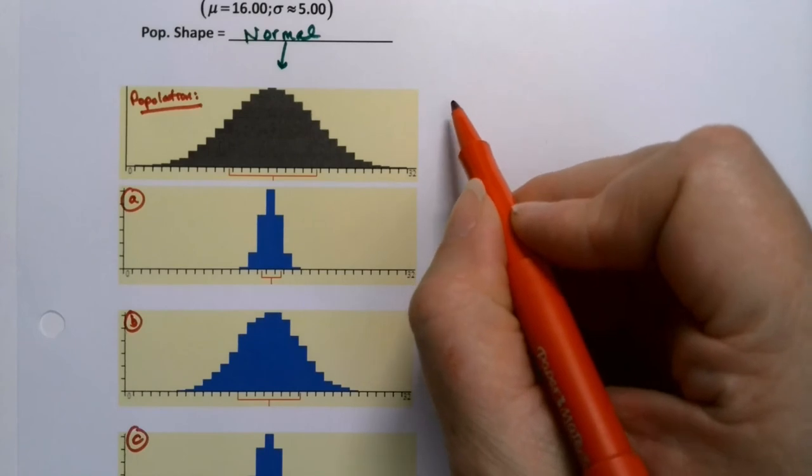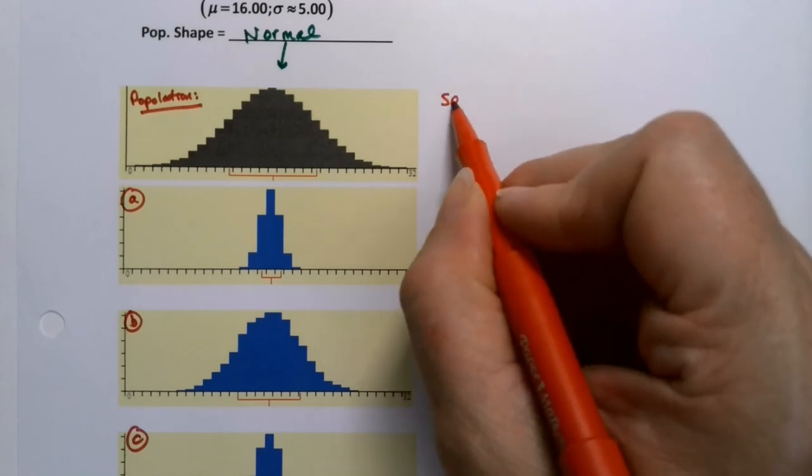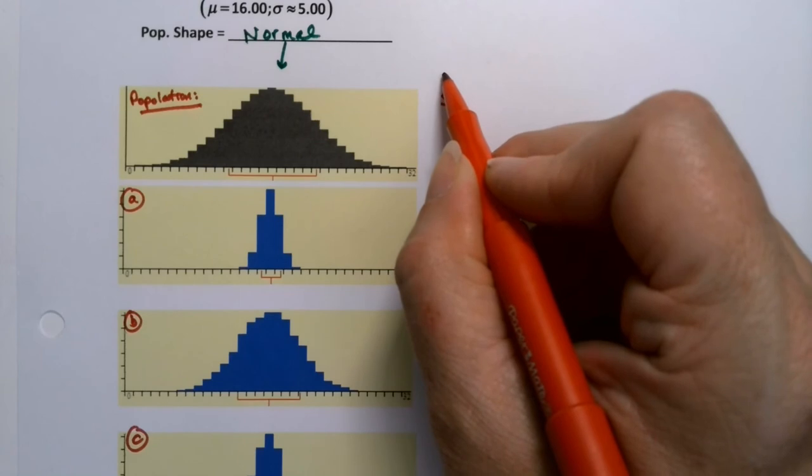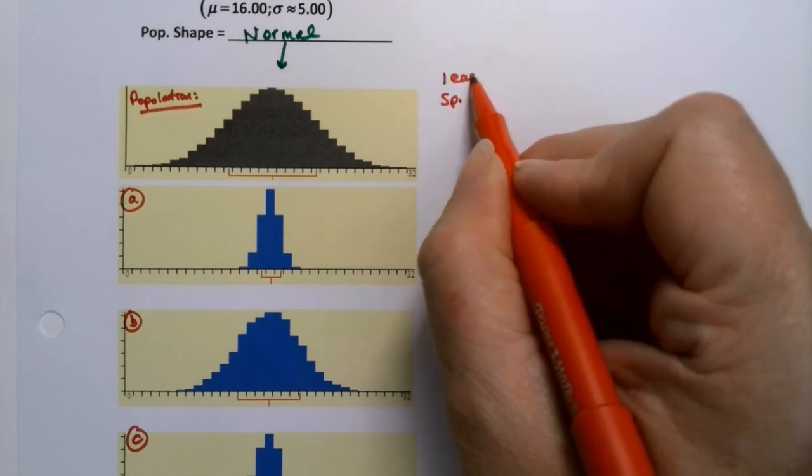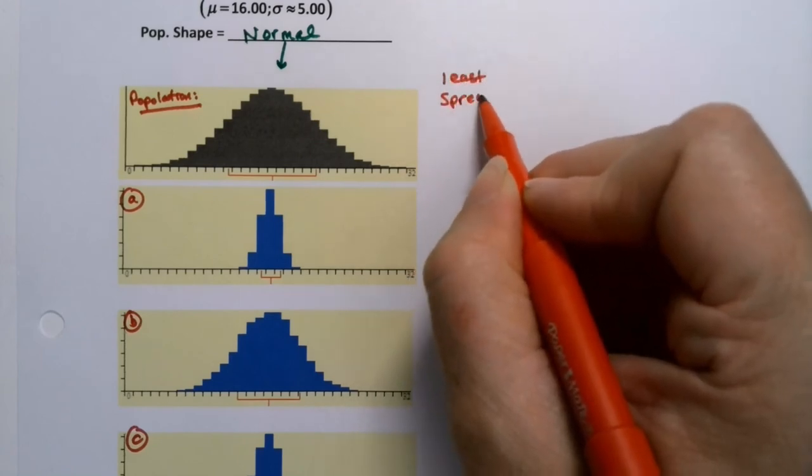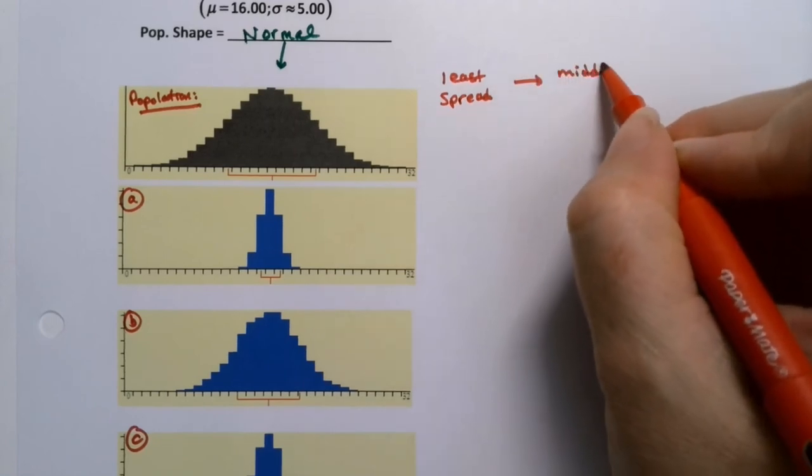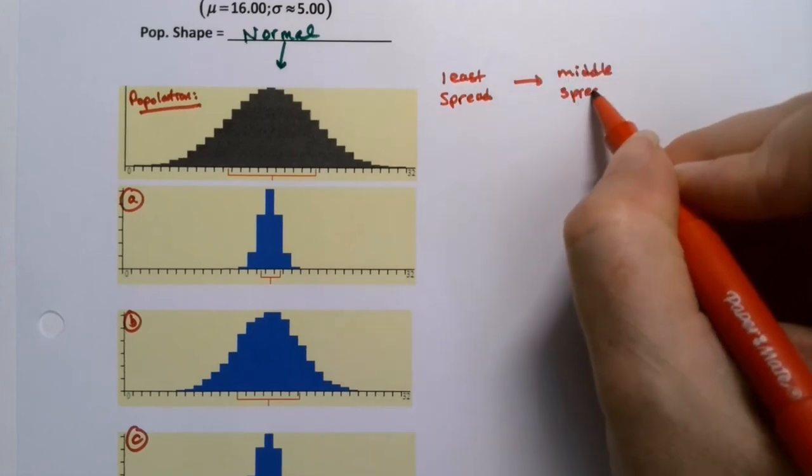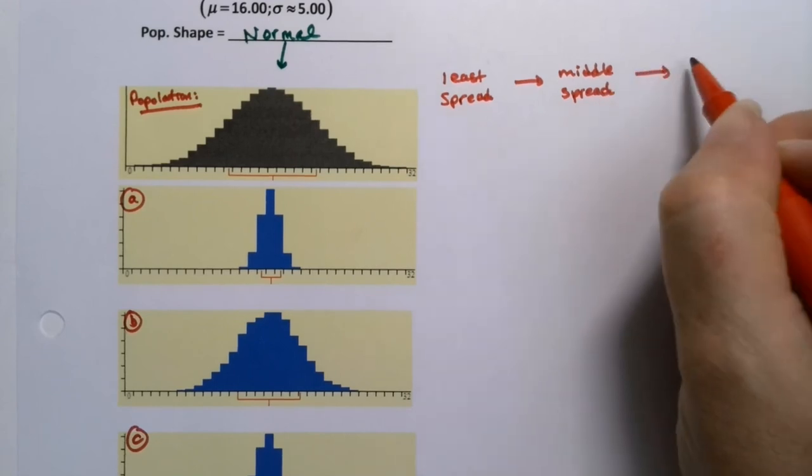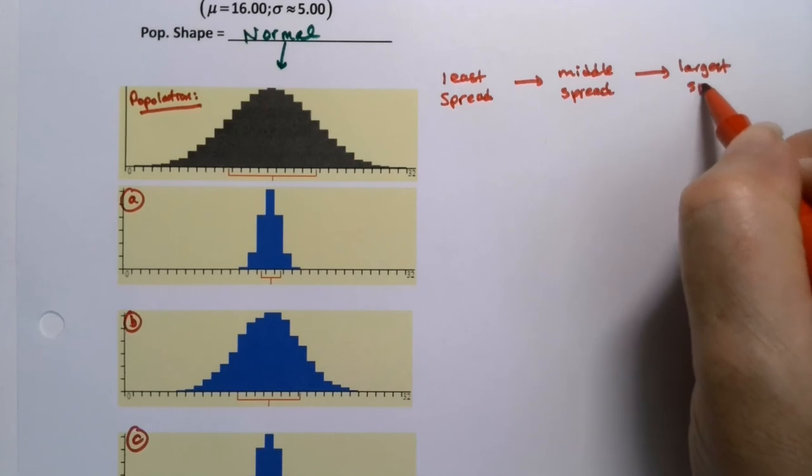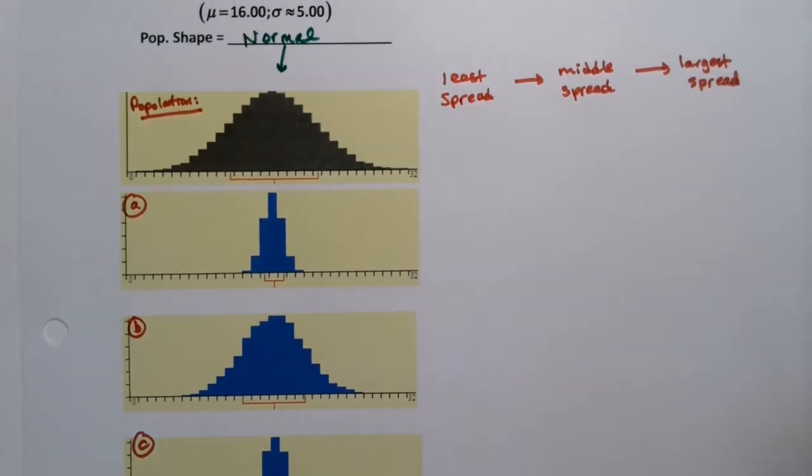So if I want to go from spread from least, so least spread, and then I can do middle spread, which one's the middle spread, and then the most spread, the largest spread, greatest spread. What will we see?